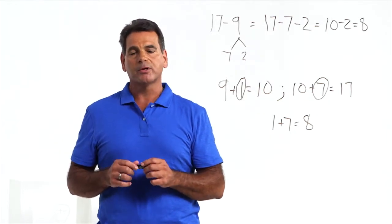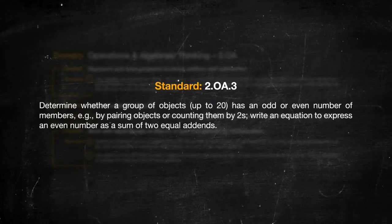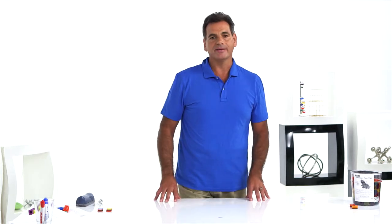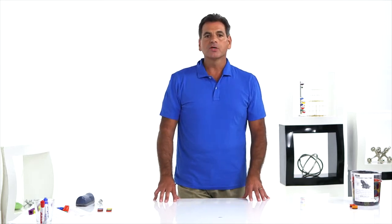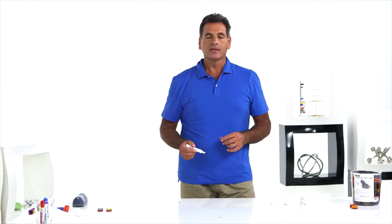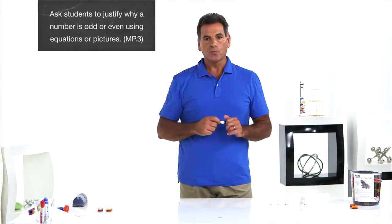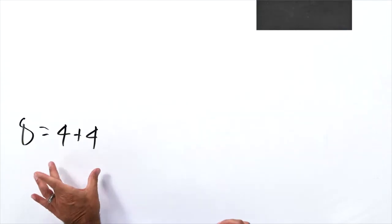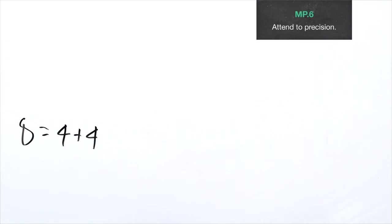And now on to standard OA3. An even number is defined as a number that can be decomposed into two equal addends. Eight equals four plus four, so eight is even. The fact that even numbers end with zero, two, four, six, or eight is a pattern — it's not a definition. A number is even if you can make two equal addends with nothing left over.